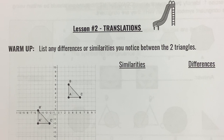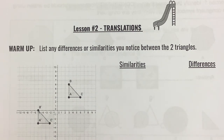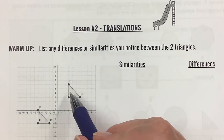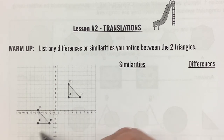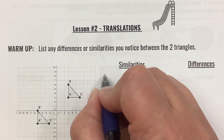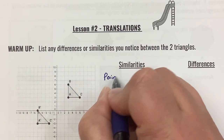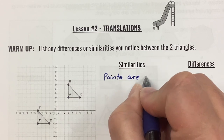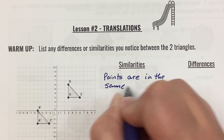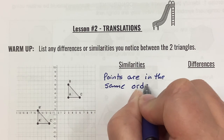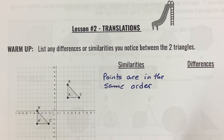I hope you paused and did the warm-up. Let's look at some similarities. A, B, C — A prime, B prime, C prime. The points are in the same order. That means that it did not change orientation. If the points are in the same order, it didn't change orientation.